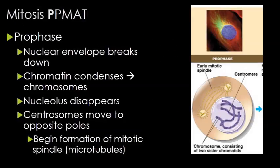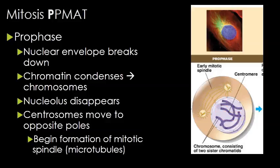Mitosis has five subsets. The first step is prophase. In prophase, the nuclear envelope begins to break down. The chromatin is condensing into the chromosomes you're used to seeing. The nucleolus — the structure that makes ribosomes — is going away. The centrosome is splitting apart, moving to opposite poles, and beginning to produce the early mitotic spindle made of microtubules.